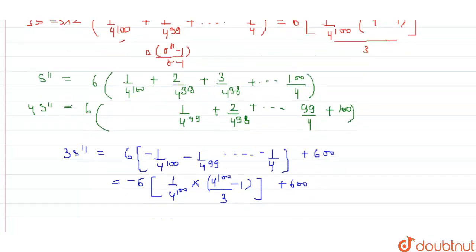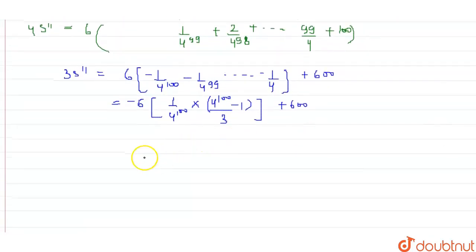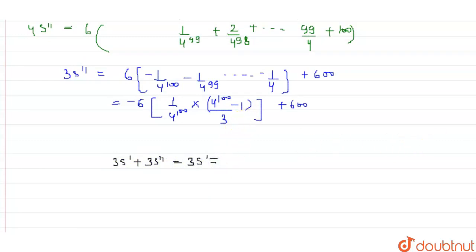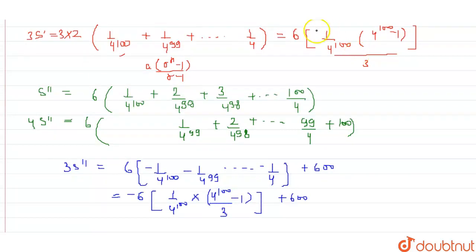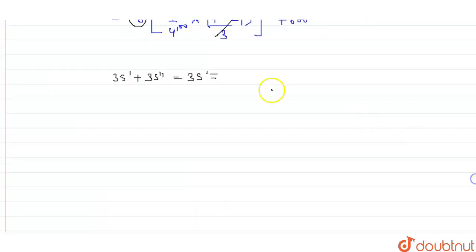Finally, 3S = 3·S dash plus 3·S double dash. Adding the two results, the terms involving 6 times (4 to the power 100 minus 1) divided by 3 cancel each other out completely. We are left with 600 only. So the value of 3S equals 600, which is the answer to this question.